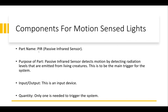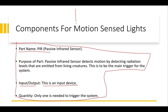Here's a basic example for motion-sensing lights. Part name: PIR passive infrared sensor. Purpose: detects motion by detecting radiation levels emitted from living creatures — this is the main trigger for the system. Input or output: input, because it detects and tells the system what to do. Quantity: only one is needed to trigger the system. You can present this as bullet points or as a table where you have columns for part name, purpose, and whether it's input or output — whichever format works for you is fine.